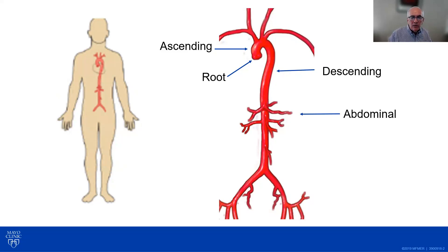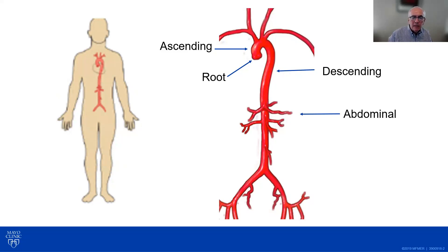The descending aorta is still in the thorax above the diaphragm. But below the diaphragm, it's called the abdominal aorta. The abdominal aorta has important branches that go to the abdominal organs — the liver, the spleen, the stomach, the small intestine, the kidneys, the large intestine. And finally, the aorta divides into the iliac arteries, which carry blood down to the pelvis and the lower extremities.